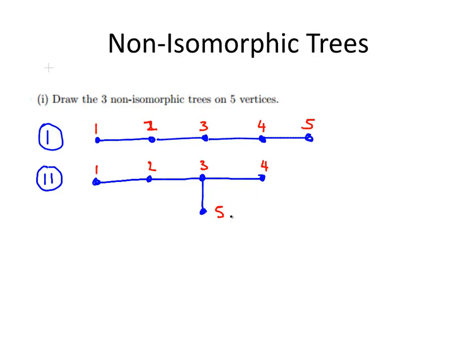You can notice there that in the path, in tree 1, we have a path graph where the highest degree is 2. In this one here we have degree 3, which is vertex 3 has degree 3.